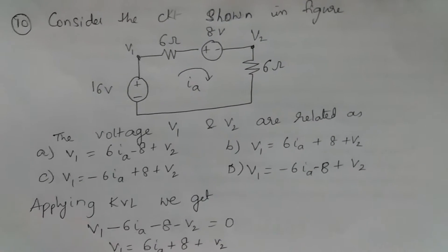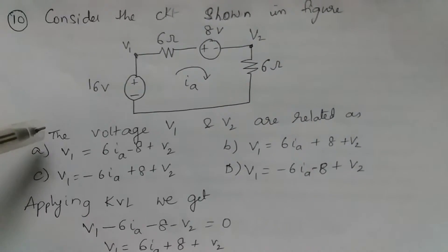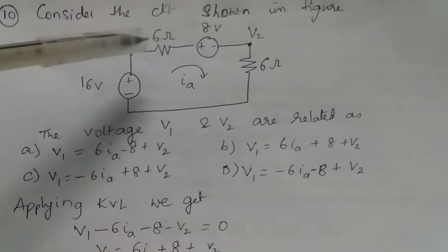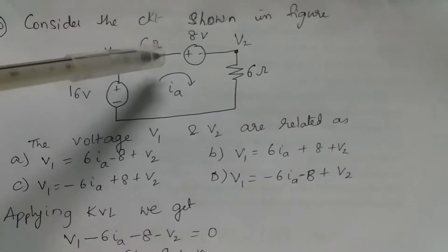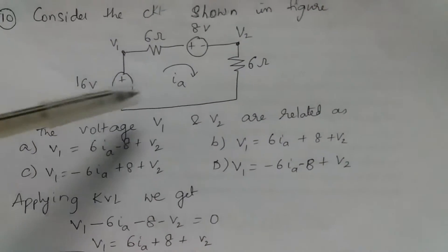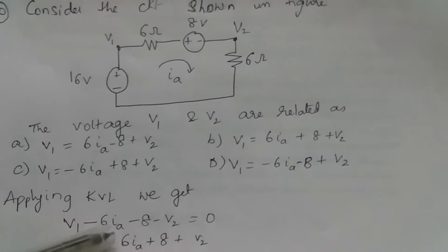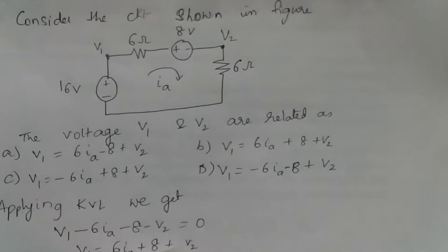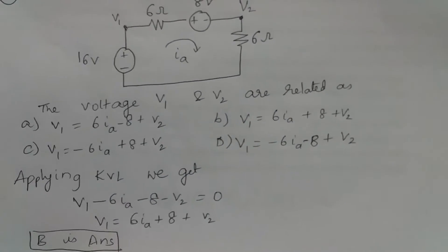Consider the circuit. How is the voltage V1 and V2 related? V1 minus V2 will be equal to 6IA plus 8. If you apply KVL we get V1 minus V2 equals 6IA plus 8, or V1 equals 6IA plus 8 plus V2. So B is the correct answer.